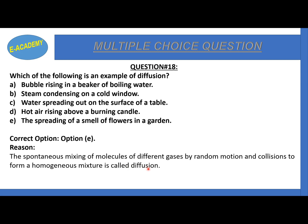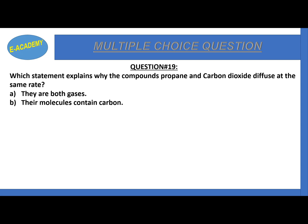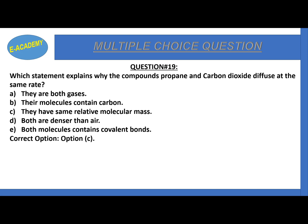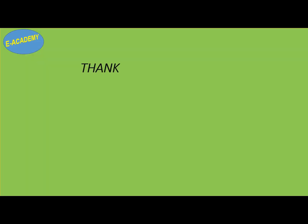Question number 19: Which statement explains why propane and carbon dioxide diffuse at the same rate? They are both gases, their molecules contain carbon, they have the same relative molecular mass, or both are denser than air? The correct option is C: they have the same relative molecular mass. The molar mass of propane is 44 g/mol and that of carbon dioxide is also 44 g/mol, so they diffuse at the same rate. That's all about the MCQ questions of chapter number 6: Solids.